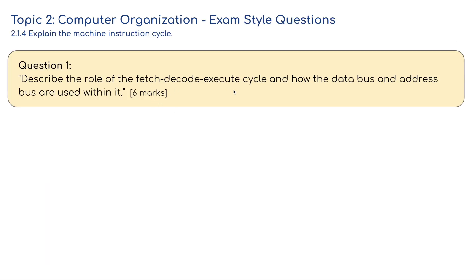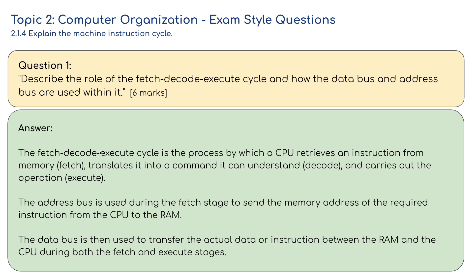I've only got one question: describe the role of the fetch-decode-execute cycle and how the data bus and address bus are used within it, for six marks. The fetch-decode-execute cycle is a process by which a CPU retrieves an instruction from memory (fetches it), translates it into a command it can understand (decodes it), and then carries out the operation (executes it). The address bus is used during the fetch stage to send the memory address of the required instruction from the CPU to the RAM. The data bus transfers the actual data and instructions between the RAM and the CPU during both the fetch and execute stages.